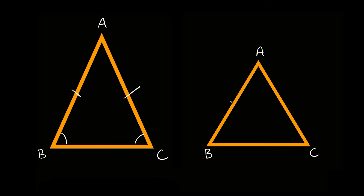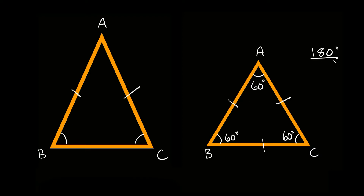All the sides are congruent and all the angles are congruent also. Remember, any triangle — no matter what kind — when you add up all three angles inside it always adds up to 180 degrees. So if these three angles are the exact same in an equilateral triangle, it's always going to be 60 degrees, 60 degrees, 60 degrees, because 60 plus 60 plus 60 equals 180 degrees.